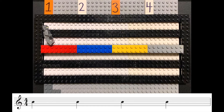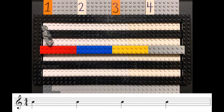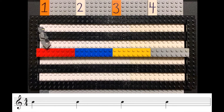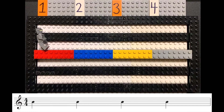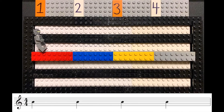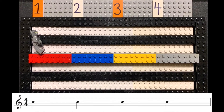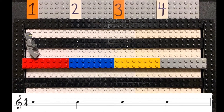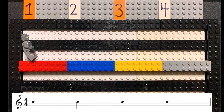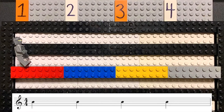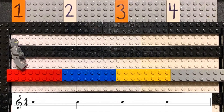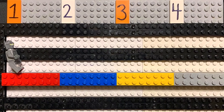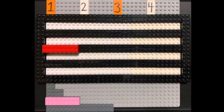A four-four measure means that four individual quarter notes can fit inside of this measure side by side. If you look up at the top of the staff, I have one, two, three, four — that tells you where each quarter note is going to start.